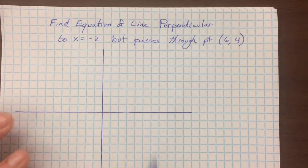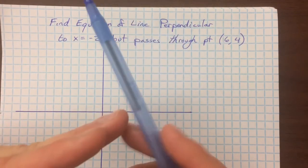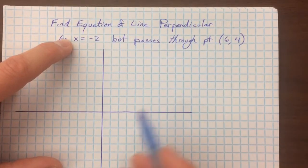So for the next problem, we're going to find the equation of a line perpendicular, so again making a 90 degree angle, to x equals negative 2, but passes through the point 6, 4.